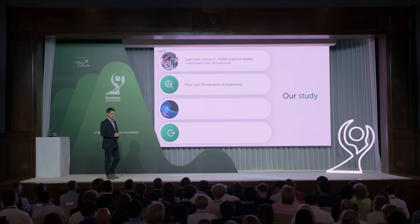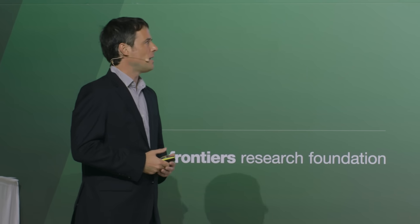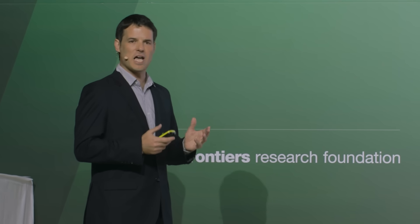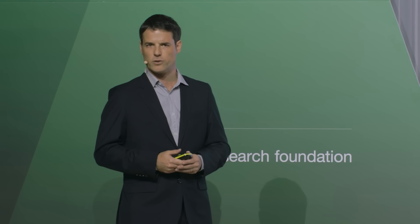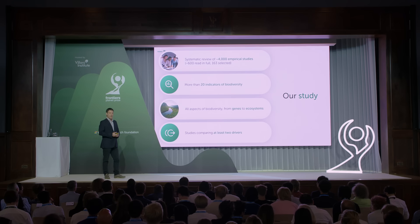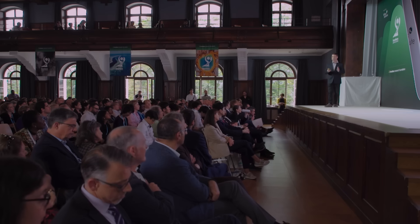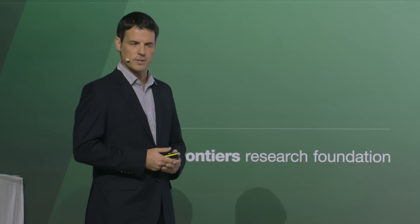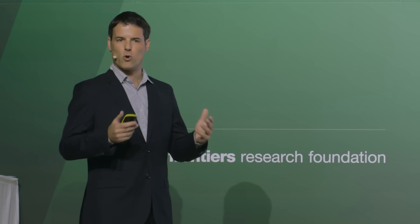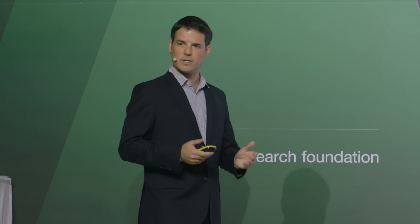Collecting the necessary evidence to respond to this question and analyzing it in an innovative way was a key aspect of our study. We performed a systematic review of over 4,000 empirical studies. We used more than 20 biodiversity indicators covering all aspects of biodiversity, from genes to species to ecosystems. We focused on studies that dealt with at least two drivers simultaneously, so that we could estimate the ranking but also compare the relative importance between the drivers, obtaining a much broader and comprehensive view on the role of these drivers in biodiversity loss.